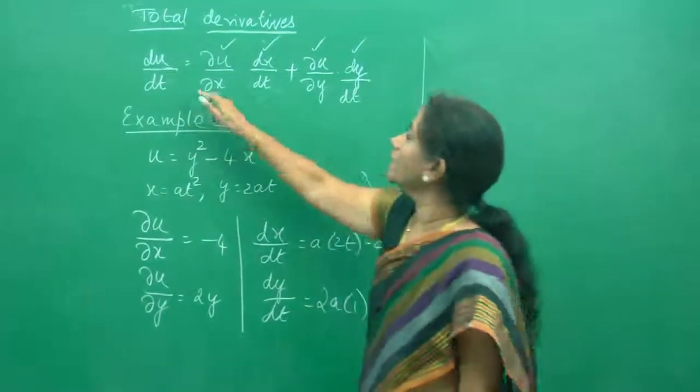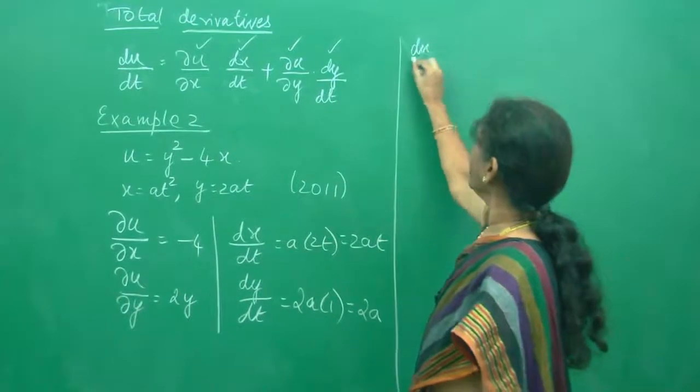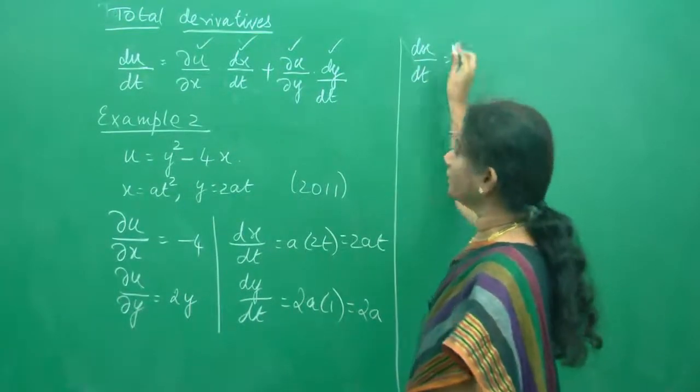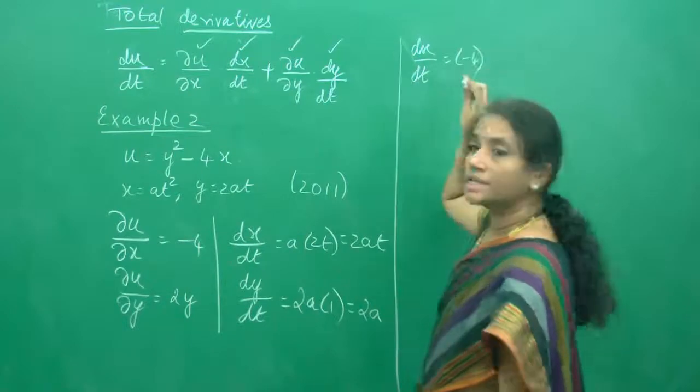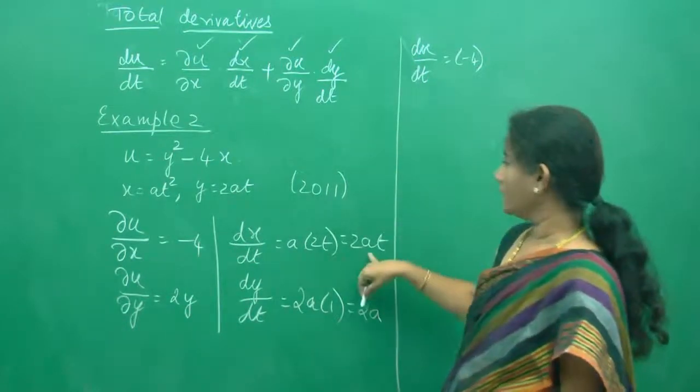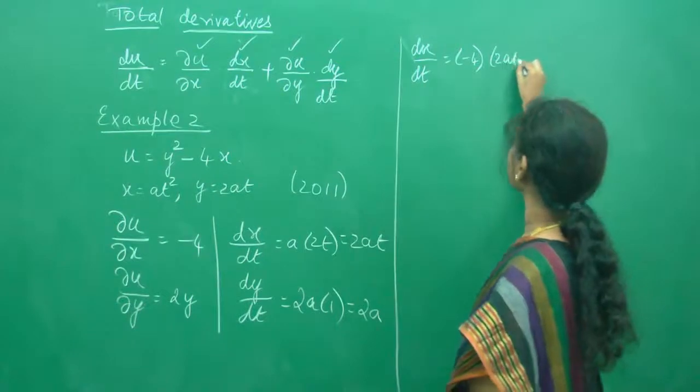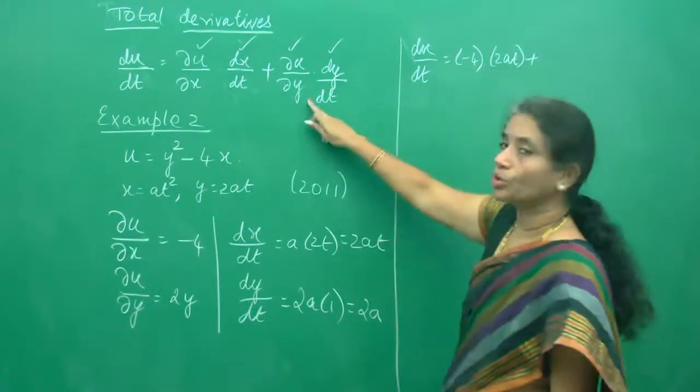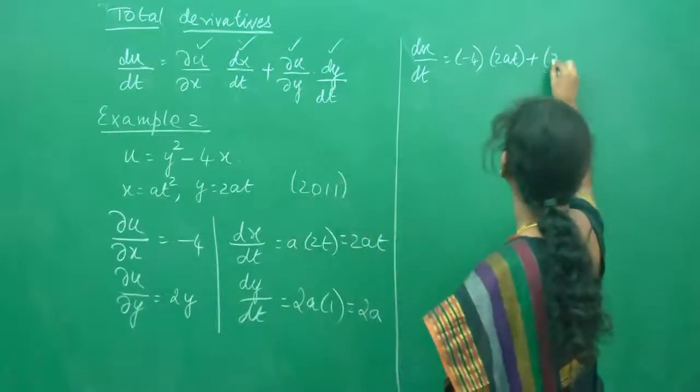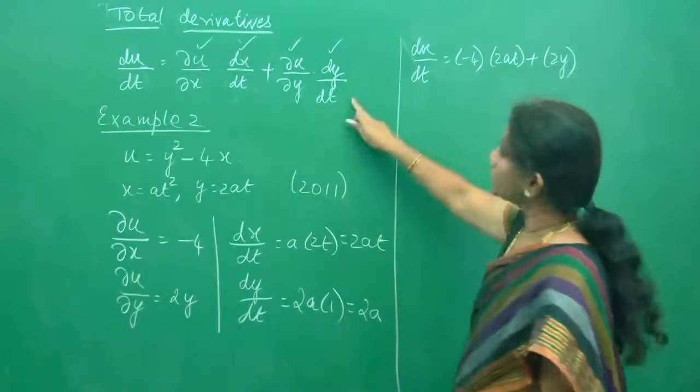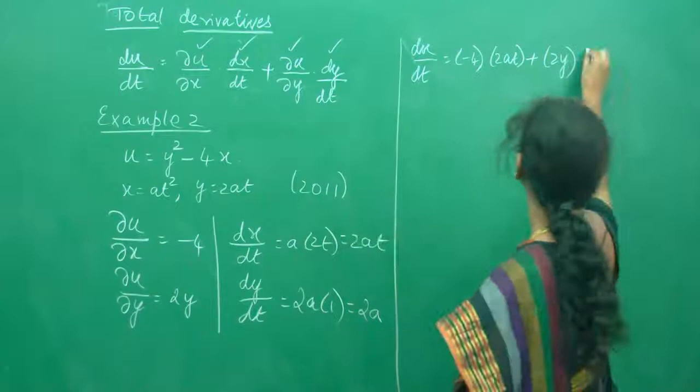So what is du by dt now? du/dt is nothing but ∂u/∂x which is minus 4. What is dx/dt? Is 2at. Plus what is ∂u/∂y? Is positive 2y. And what is dy/dt? Is 2a. So I have substituted everything.